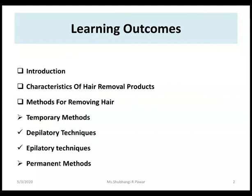Moving to the learning outcomes or learning objectives: Introduction, characteristics or qualities of hair removal products, and methods for removing hair — mainly two types, that is the temporary method and permanent method. In the temporary method, we will discuss about depilatory techniques and epilatory techniques. Today's lecture will more focus on the methods for removing hair, particularly temporary methods.